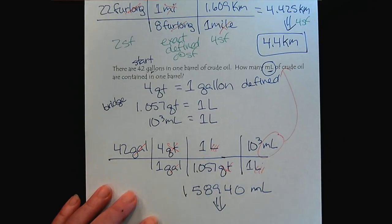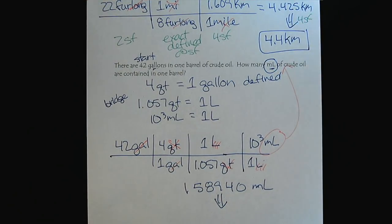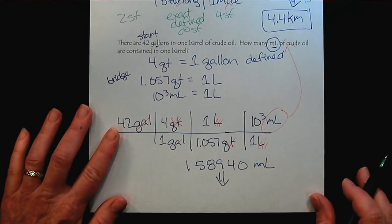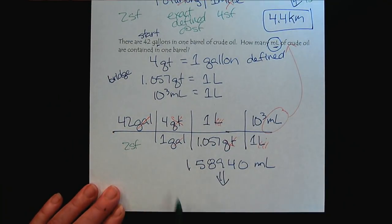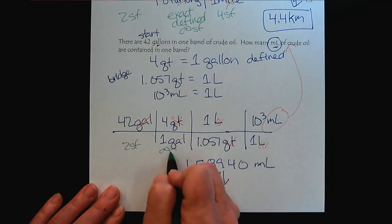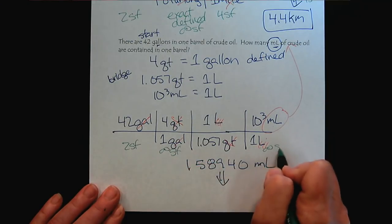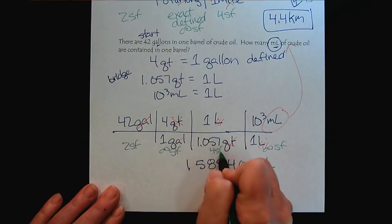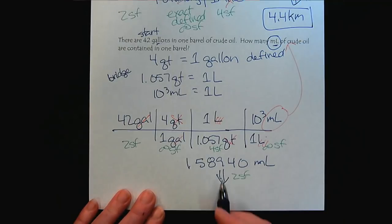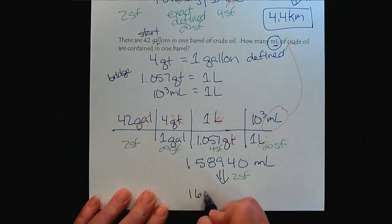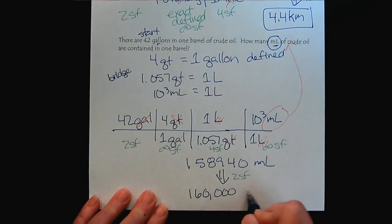And then last but not least, let's go ahead and report this using the correct number of sig figs. So 2 sig figs here, infinite, infinite, and 4. So we would report this answer to 2 sig figs. And sometimes this feels really strange, but it would be 160,000 milliliters.